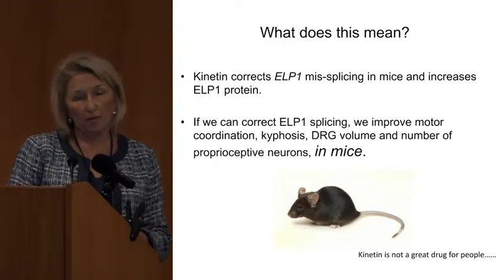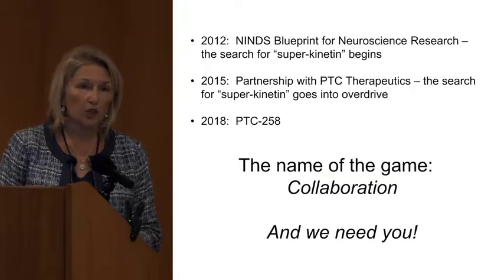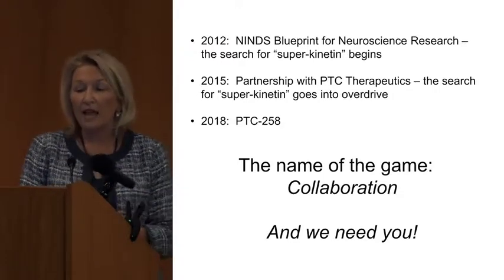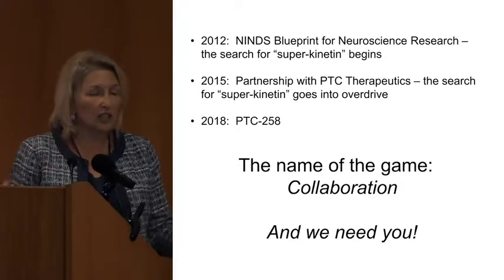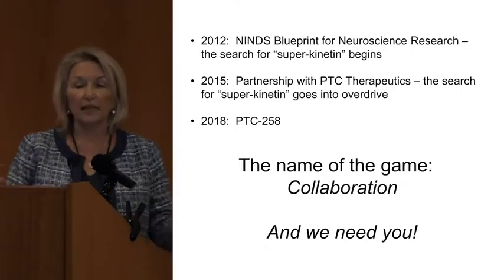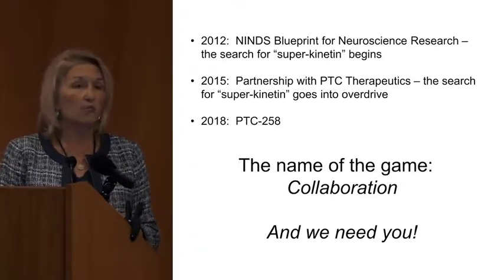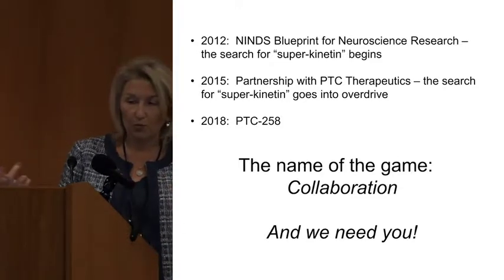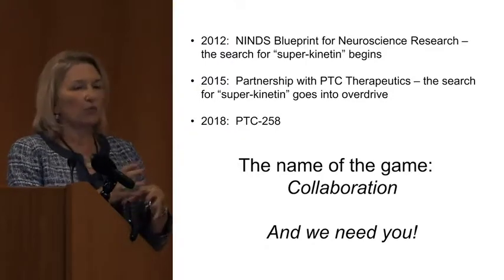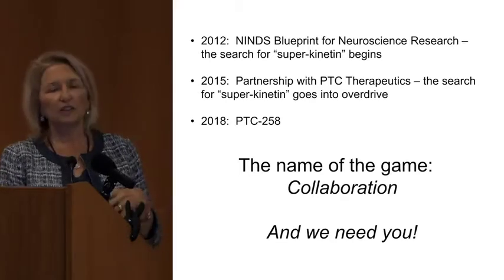We all know that Kinetin is not a great drug for people. Many of you who have been involved for a very long time know we did some studies on Kinetin. Kinetin isn't very potent — it takes a lot of Kinetin to do this job, and we had to give these mice a significant amount of this drug. It made patients nauseous when we tested it in a few patients. So we worked very hard over the last several years to improve Kinetin — get a better Kinetin, Super Kinetin, we called it. In 2012, with funding from the NIH as part of the NINDS Blueprint for Neuroscience Research Program, we began the search for what we lovingly termed Super Kinetin. We did medicinal chemistry — we took the actual chemical structure of that molecule and improved it and tested it iteratively, making new compounds and asking if they're better or worse.